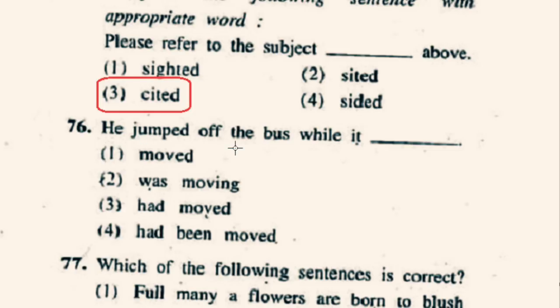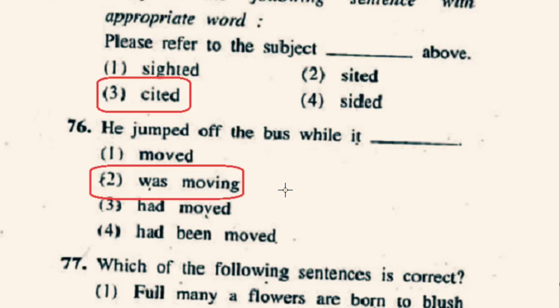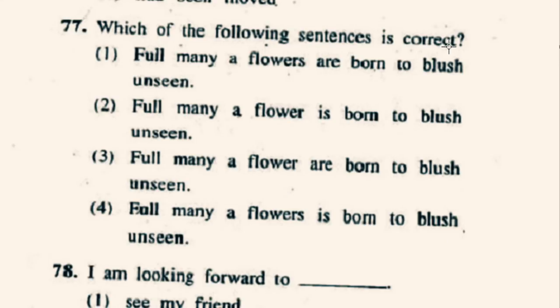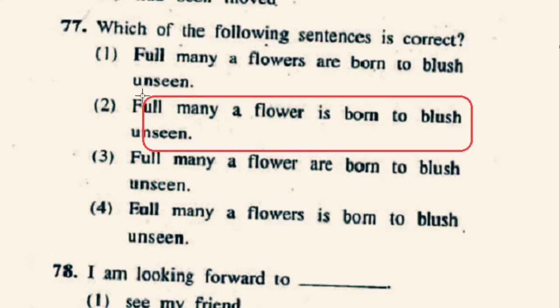Question number 76: 'He jumped off the bus while it ___.' The correct option will be 2nd option: was moving. He jumped off the bus while it was moving. Question number 77: Which of the following sentences is correct? The correct sentence is given in option 2nd: 'Full many a flower is born to blush unseen.' We always use singular verb with 'many a' and 'more than one.'